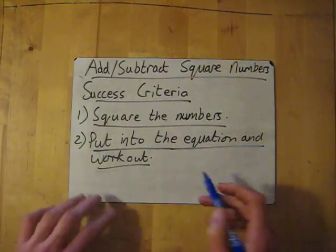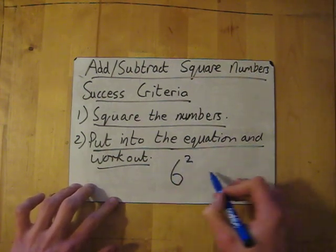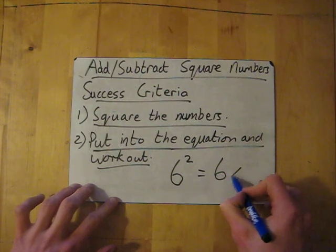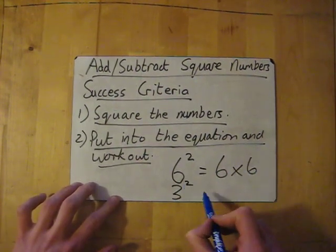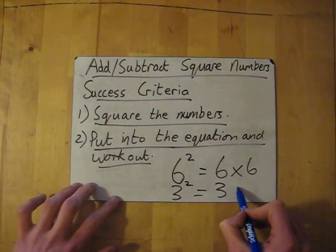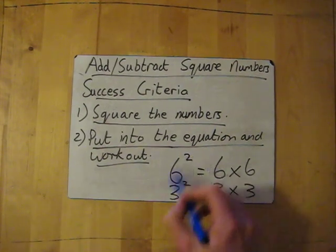Square number means you times it by itself. So 6 squared is actually the same as 6 times 6, as is 3 squared which would be the same as 3 times 3. That's all it means, basically multiplying the number by itself.